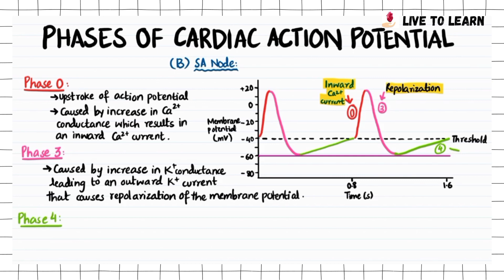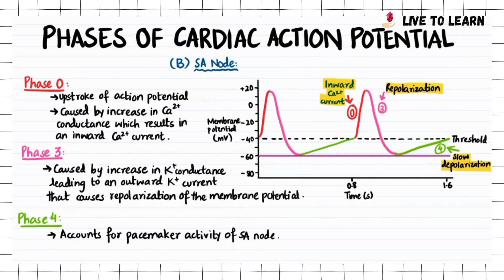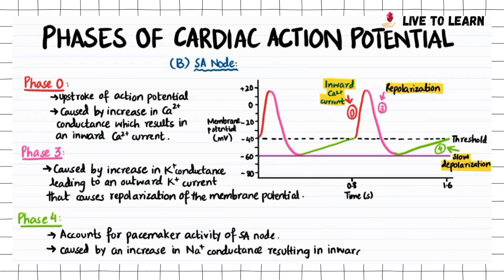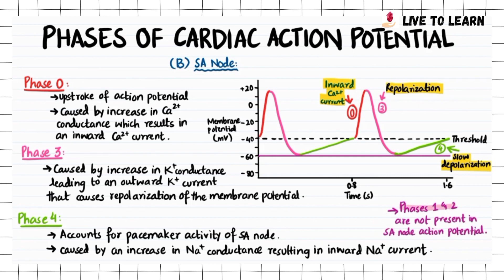Phase 4, the part shown in green on the graph, represents a period of slow depolarization. This accounts for the pacemaker activity of the SA node. It is caused by an increase in sodium conductance, resulting in an inward sodium current. It is to be noted that phases 1 and 2 are not present in the SA node action potential.